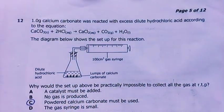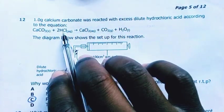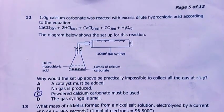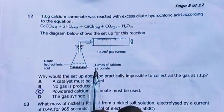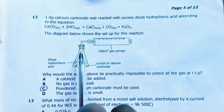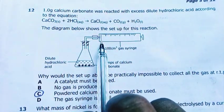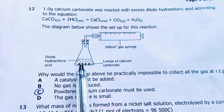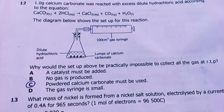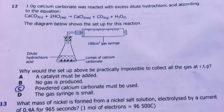Question 12. 1.0 grams calcium carbonate was reacted with excess dilute hydrochloric acid according to the equation: CaCO3 + HCl gives CaCl2, CO2, H2O. The diagram below shows the setup of the reaction. You're having acid here, lumps of calcium carbonate. As they react, they'll produce a gas. This gas will be released in this environment, which will increase pressure, so the plunger of the syringe will move backwards. Why would the setup above be practically impossible to collect all the gases at RTP?